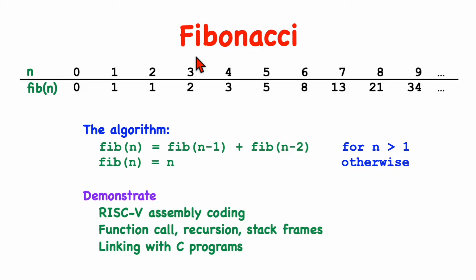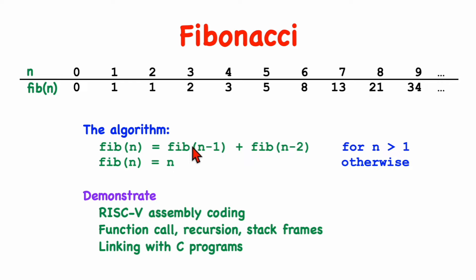In this video, we're going to use the Fibonacci series as our example. Recall that every Fibonacci number, such as 8, is computed by adding the previous two Fibonacci numbers. We're going to write a function called fib that's passed an argument n and returns the nth Fibonacci number, so when passed 8, it would return 21. To compute Fibonacci of n, we're going to call this function itself recursively two times, passing smaller values of n.